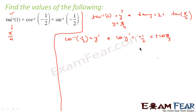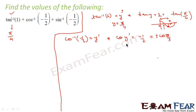We know minus 1/2 is nothing but cos(2π/3). See, the cos graph starts at cos(0) = 1 and comes down. cos(2π/3) is somewhere here, giving minus 1/2. We took this value because 2π/3 is in the principal interval for cos inverse, which is [0, π]. So comparing the two equations, y dash equals 2π/3. So cos inverse of minus 1/2 is 2π/3.